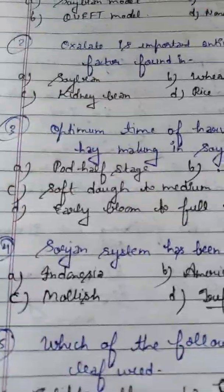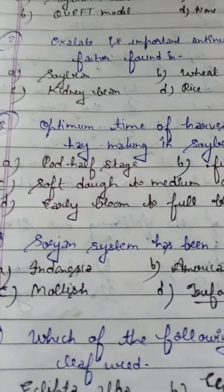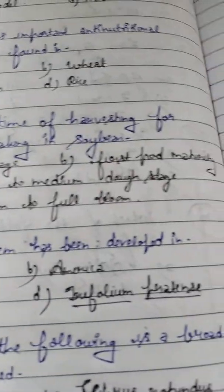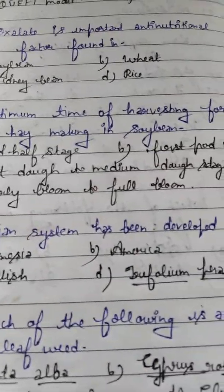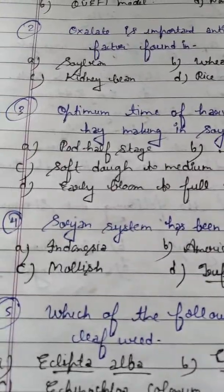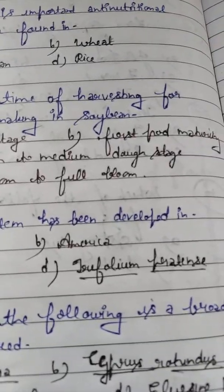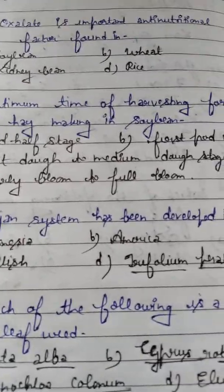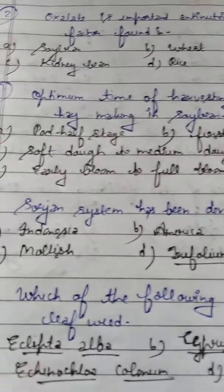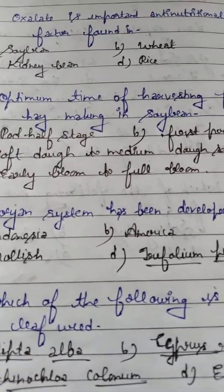Student, question number 3: What is the optimum time of harvesting for hay making in soybean? Option A: Pod half stage. Option B: First pod maturity. Option C: Soft pod to medium dough stage. Option D: Early bloom to full bloom.